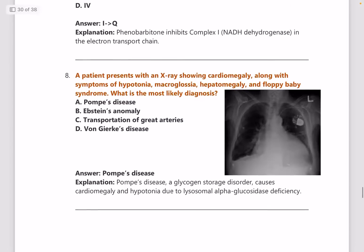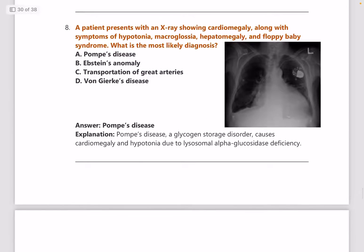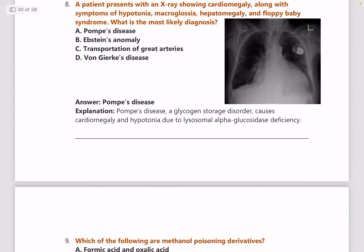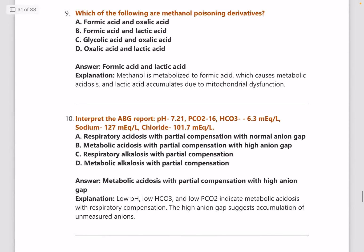Next: a patient presents with an X-ray showing cardiomegaly, along with hypertonia, macroglossia, hepatomegaly, and floppy baby syndrome — what is the most likely diagnosis? Answer is Pompe's disease. To have a better idea, go through the glycogen storage disorders chart and also the chart on mucopolysaccharidoses.